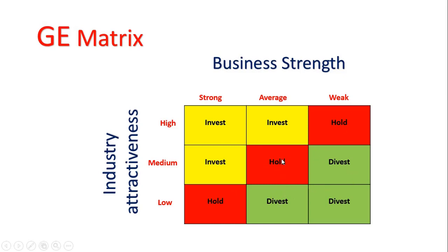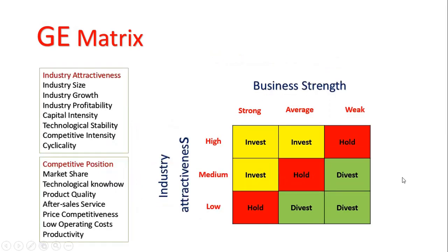Now let's put the components and the table together. If your business strength is weak and you want to improve it, focus on these factors: market share, technological know-how, product quality, and the other business strength components. If your industry attractiveness is low or medium, focus on: industry size, industry growth, industry profitability, capital intensity, technological stability, competitive intensity, and cyclicality.